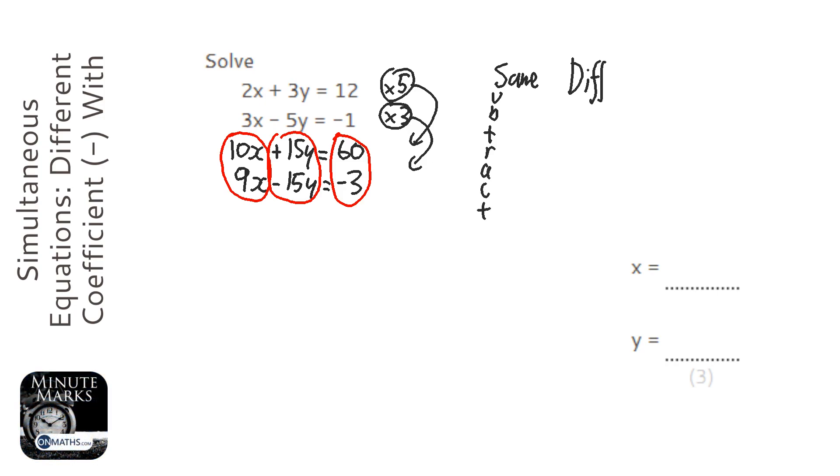If they're different, we add. Simplest rule ever. So we've got 15y and we've got minus 15y, so they are different, so we're going to add.